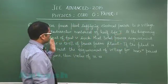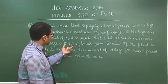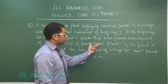It says a nuclear power plant supplying electrical power to a village uses a radioactive material of half life T. At the beginning the amount of fuel is such that total power requirement of village is 12.5% of power from the plant.